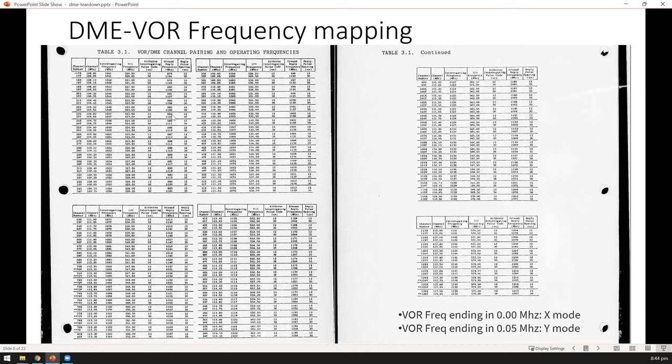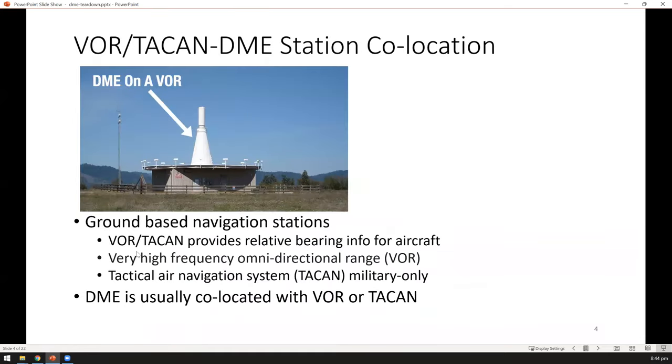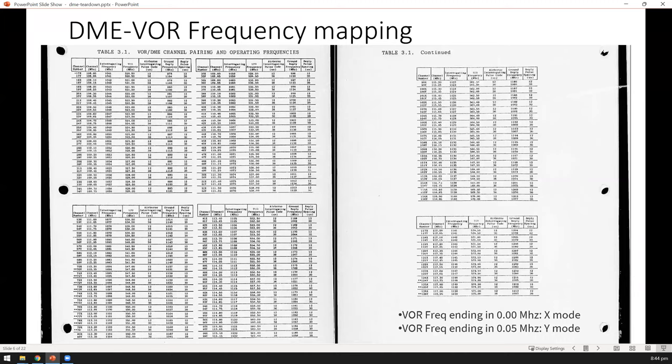This table shows that there's a fixed mapping from VOR to DME. Remember that there's co-location here. VOR uses a certain set of frequencies to provide bearing information. Since they're almost always co-located to each other, when there's a VOR frequency, for example of 108 MHz, the associated DME frequency is 1041 and the ground reply frequency is 978. These two frequencies are exactly 63 MHz apart. X means the VOR frequency ending with 0.00, and Y means the VOR frequency ending with 0.05.